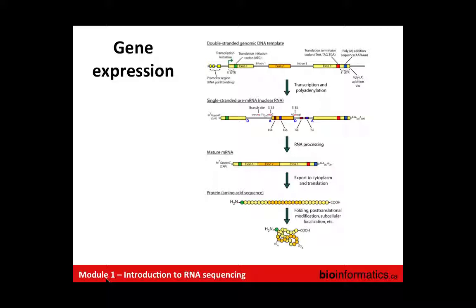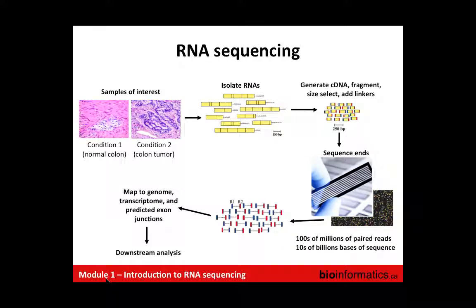Consider a simple experimental design — the data we'll analyze in the tutorials is based on a scenario with just two samples: a colon tumor sample and a matched normal sample from adjacent colon tissue. From those two tissues, we isolated RNA. The scale shown is 250 bases, and these RNAs are on the order of 500 to 5,000 bases in size, representative of human RNAs.